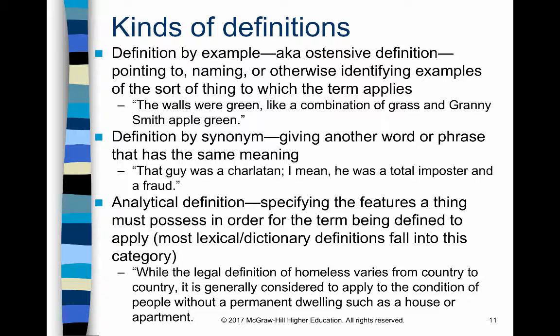Definition by synonym has to do with language. You define your term by using another word or phrase that has a similar or exact meaning. For example: 'That guy was a charlatan — I mean, he was a total imposter and a fraud.' This person is defining the word 'charlatan' by using other words — 'imposter' and 'fraud' — that mean the same thing.